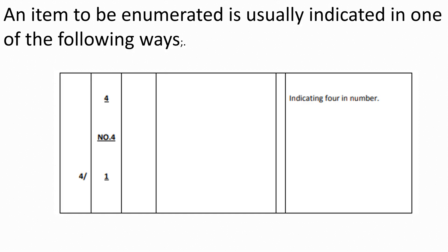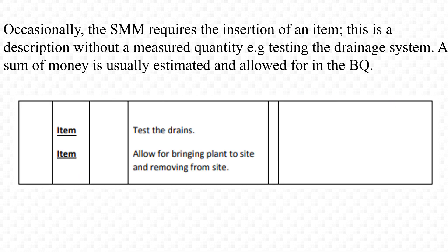An item to be enumerated is indicated in one of the following ways: you can write four in the dimension column, write 'number four,' or write 'four times one.' All of these indicate it is four in number. Occasionally, the quantity surveyor requires the insertion of an item that is a description without a measured quantity — for example, testing a drainage system — where a sum of money is estimated and allowed in the BQ.